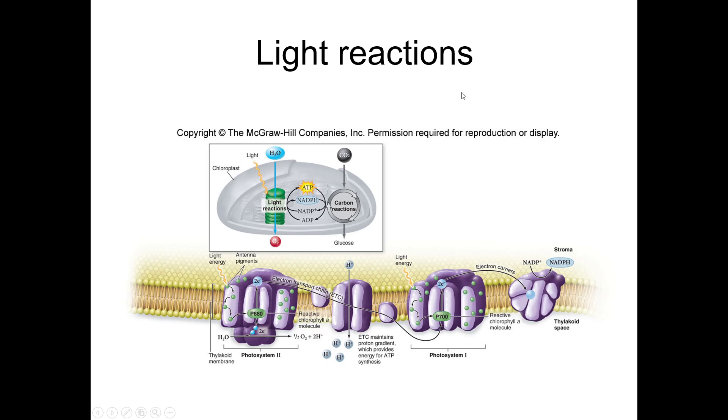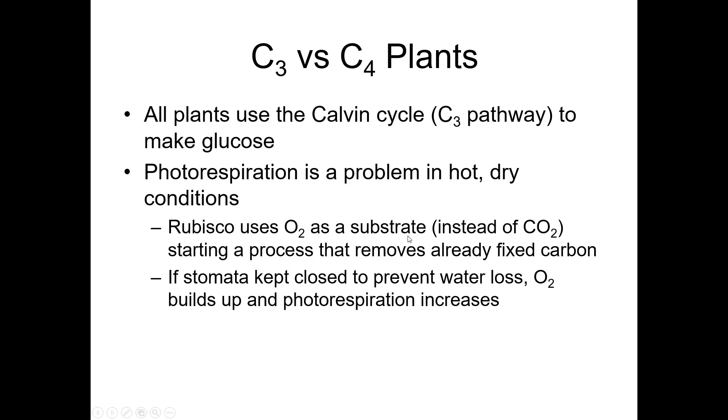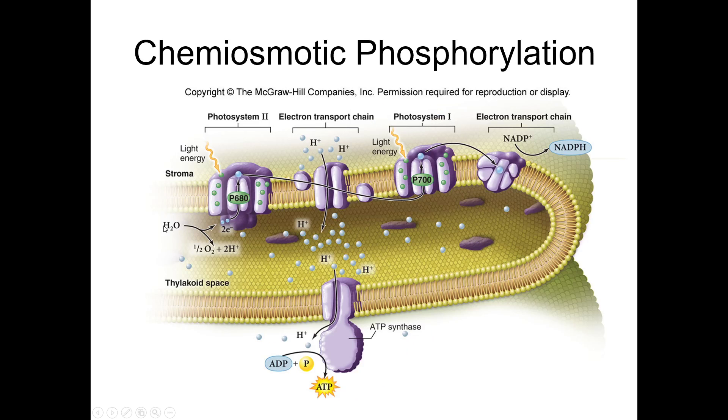Now, the other questions you're going to get are on some of the particulars of photosynthesis: photosystem II, photosystem I, chemiosmotic phosphorylation, where water is involved. Remember, when water is not available, everything shuts down, not just ATP and NADPH production, but also the Calvin cycle, because where's the Calvin cycle going to get energy if not from the light reactions. So everything shuts down if there's no water.